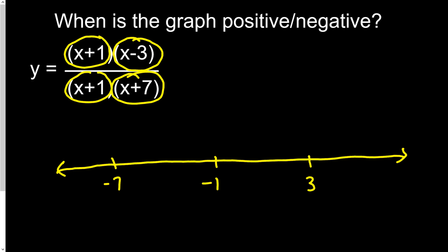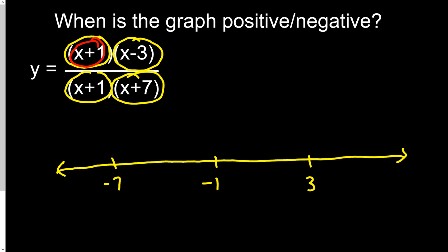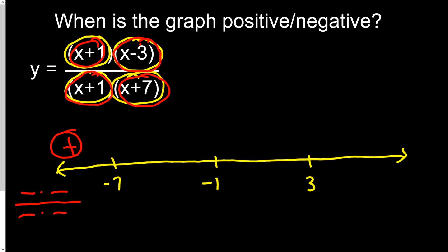For a value less than negative 7, let's try negative 8. Plugging into each factor: x plus 1 gives negative, x minus 3 gives negative, x plus 1 gives negative, and x plus 7 gives negative. So top has negative times negative — positive; bottom has negative times negative — positive. Overall the function is positive in that region. For a value between negative 7 and negative 1, let's try negative 2: x plus 1 is negative, x minus 3 is negative, x plus 1 is negative, x plus 7 is positive. Three negatives means one net negative, so the function is negative in that region.